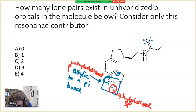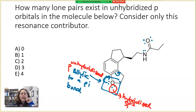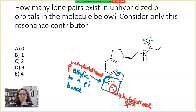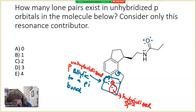So this one lone pair is in an sp2 orbital. Does it matter which lone pair you pick? Not really — it could have been either one. The key is knowing that only one of the two can participate in resonance. So one would be in a hybridized sp2 orbital, and the other is the lone pair that's in a p orbital.